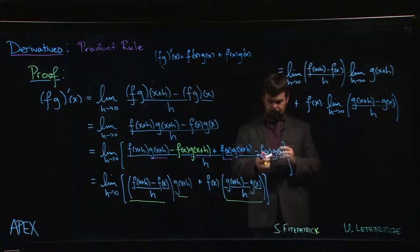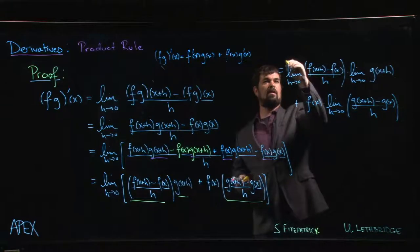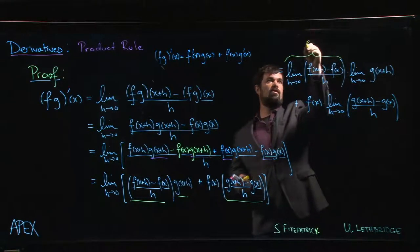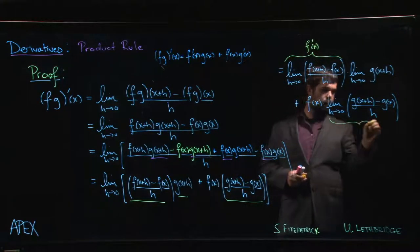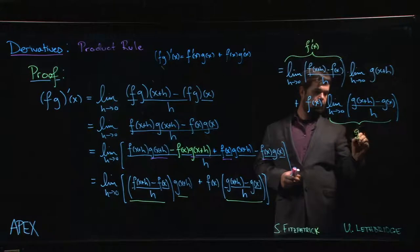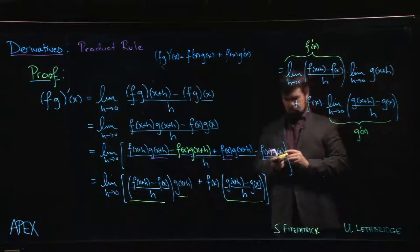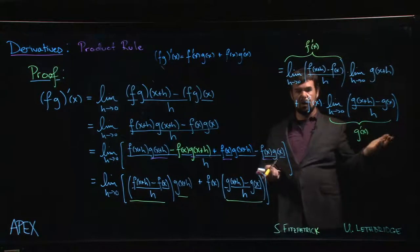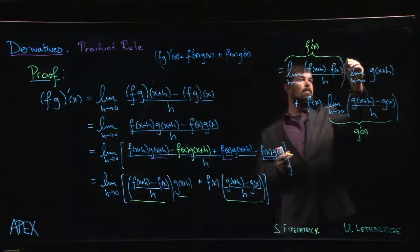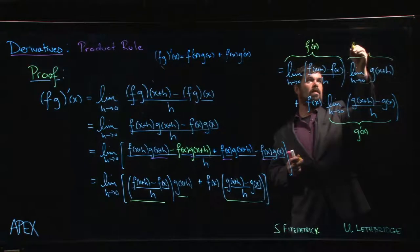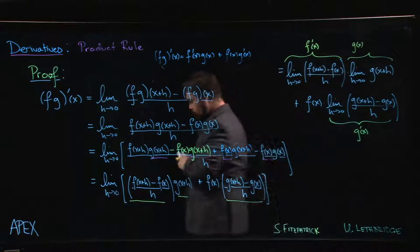So now we look at this and we say I know what this is. This by definition is f prime of x. This by definition is g prime of x. What about this? Well it looks like you should be able to just put h equal to zero and then you get g of x, which of course is what you want, and it is.